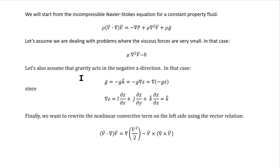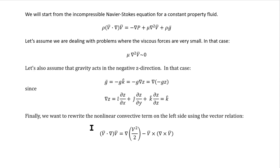We also assume that gravity acts in the negative z direction, so the gravity vector g-bar equals minus g in the k direction. This can be written as minus g times grad z, because grad z equals k since z is not a function of x or y and dz/dz equals unity. Third, we rewrite the nonlinear convective term using a standard vector relation found in any math book.